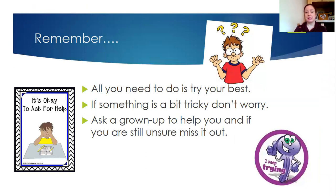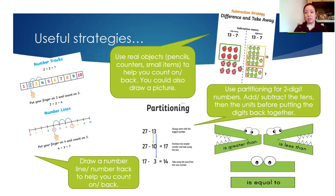Remember, all you need to do is try your best. If something is a little bit tricky, don't worry about it — we've got grownups that you can ask to help you. If you're still unsure of what to do, just miss it out and carry on, and then we'll go through it in our feedback session on Friday. Useful strategies you might use: number tracks, number lines — and don't forget that rulers are number lines too — you can use those to help you counting on and counting back. You can draw things out, use real objects. At school we often use cubes, but you might have little toys, pencil crayons, or screwed up pieces of paper that you can use to practically count out and work out your answers. Also use your partitioning, thinking about whether numbers are equal to, greater than, or less than each other.